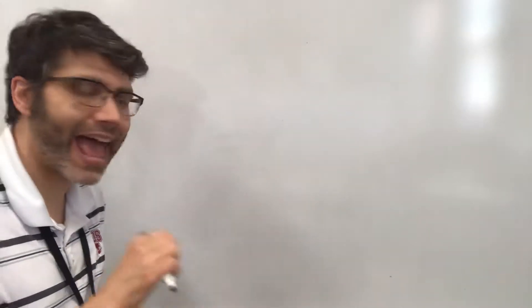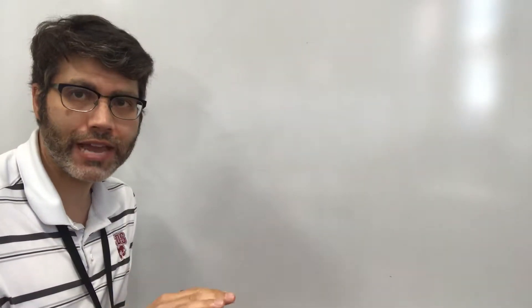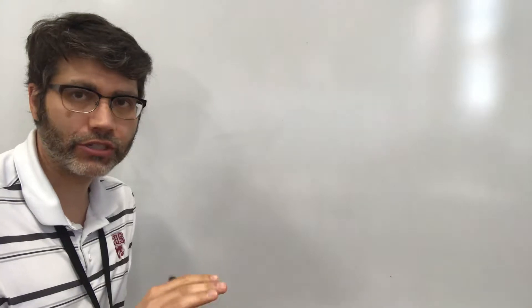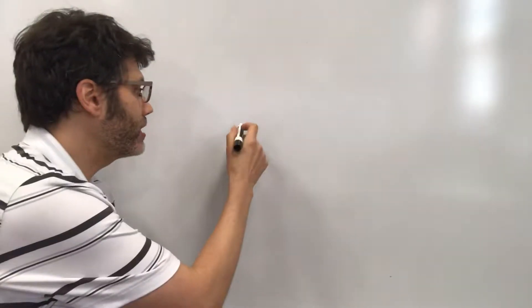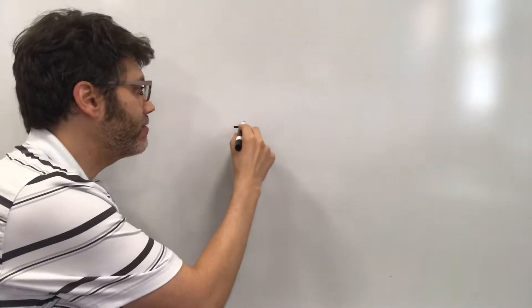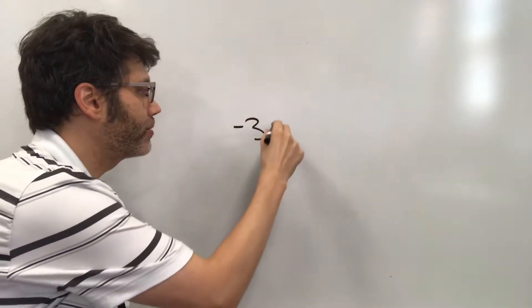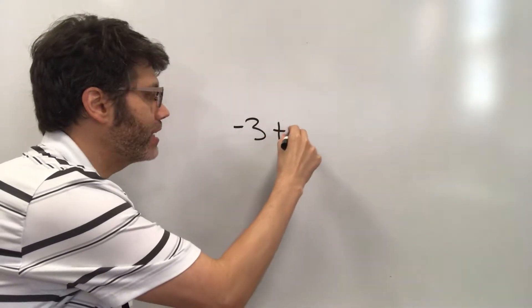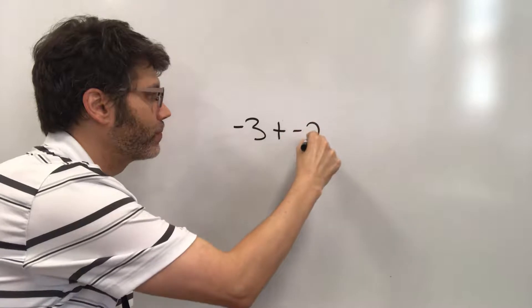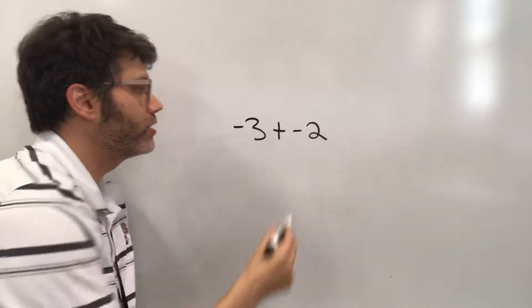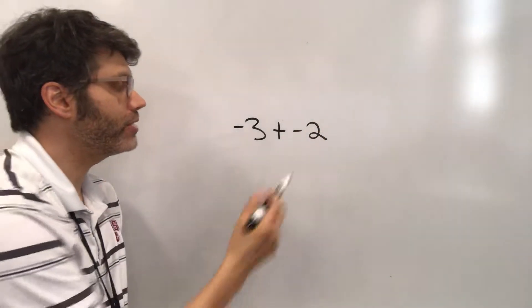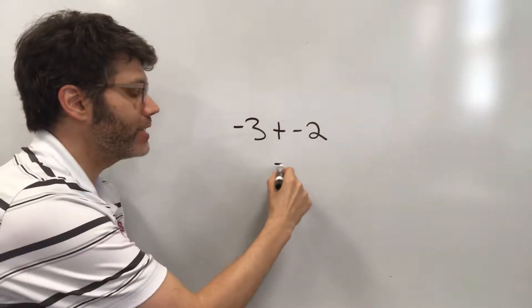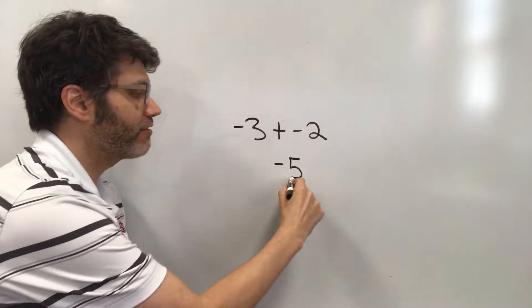Let's start off by adding two negative integers. Let's say we had negative 3 and we were adding it to negative 2. This is going to turn out to be negative 5.